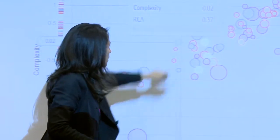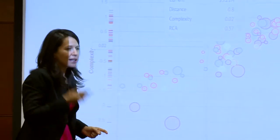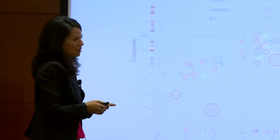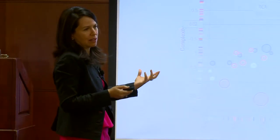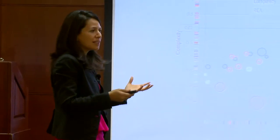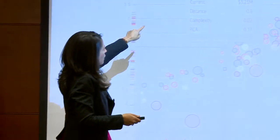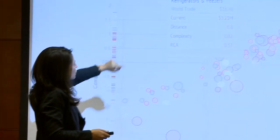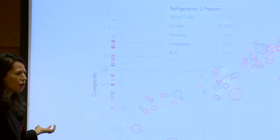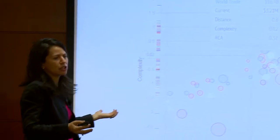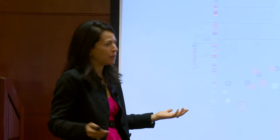The bubble closest to Guatemala's productive structure and most complex is refrigerators and freezers. Ricardo and I went to visit this anomaly — a monkey in Guatemala. We found $3 million of exports from Guatemala in that product, because a Siemens company had come 30 years ago and then left, but the engineers it had trained had stayed and built their own freezer companies.